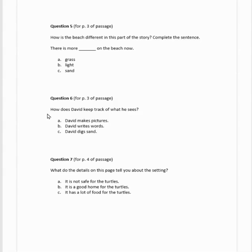Question seven. What do the details on this page tell you about the setting? So, again, it's important that we go back to page four. This is exactly where they're talking about. And they want us to pay attention to the setting. A, it is not safe for the turtles. B, it is a good home for the turtles. Or C, it has a lot of food for the turtles. So, again, what do the details on page four tell you about the setting?